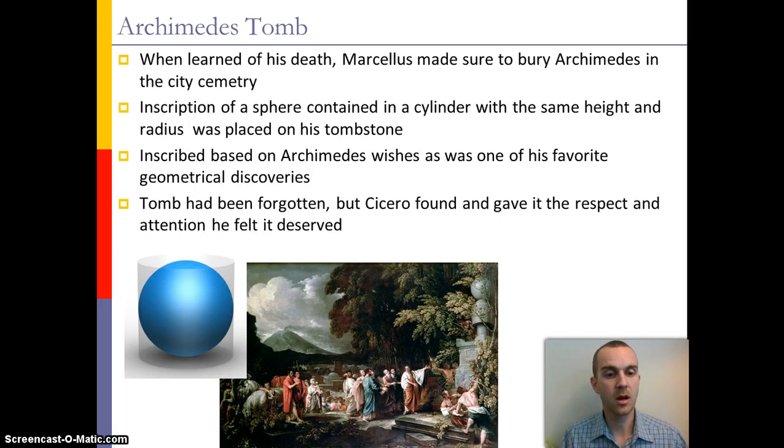Now the component to Archimedes' tomb that's interesting is the idea of what's inscribed on it. When he wanted his tomb made, he wanted to have a sphere inside of a cylinder where the sphere and the cylinder are the same height because finding the relationship between the two of those was something that he was most proud of finding. The tomb had been forgotten, but Cicero found it and gave it the respect and the attention that he felt it deserved as he came through with the Romans.